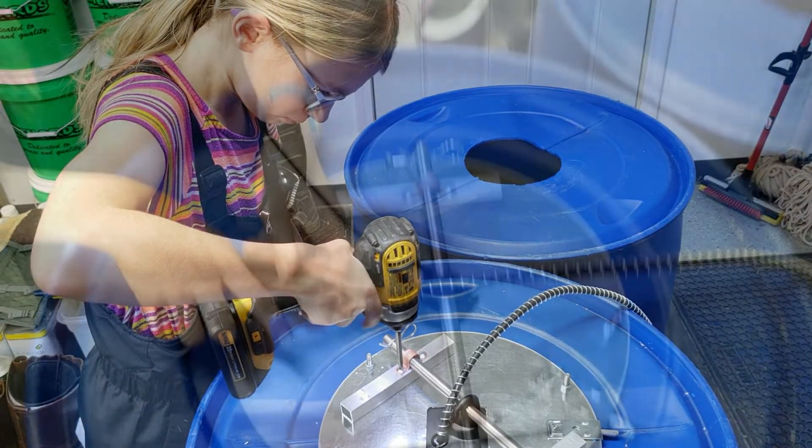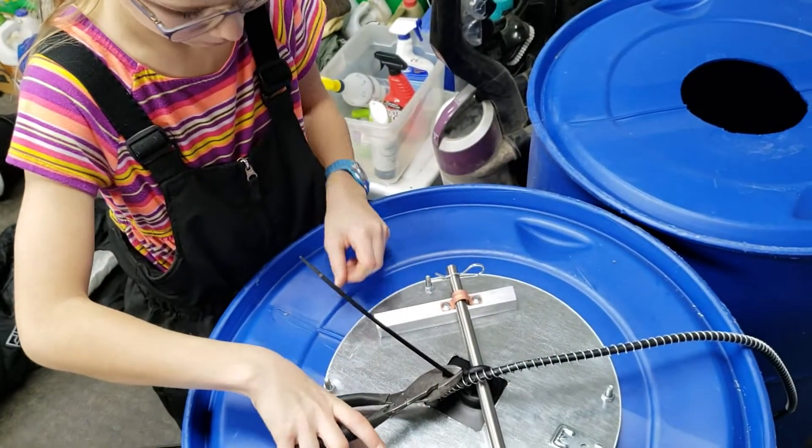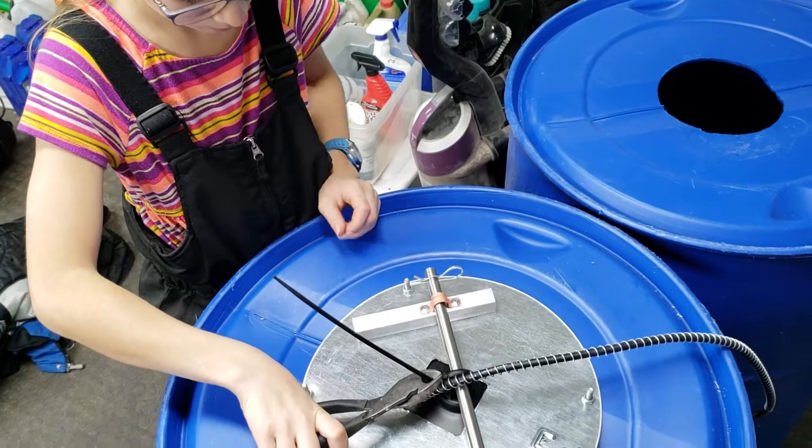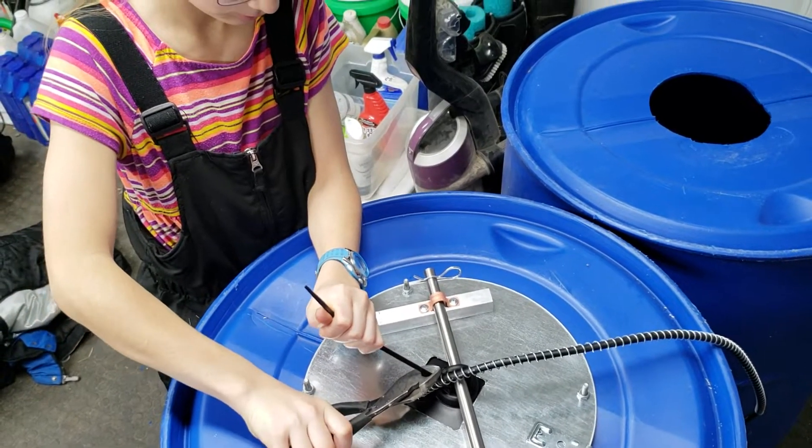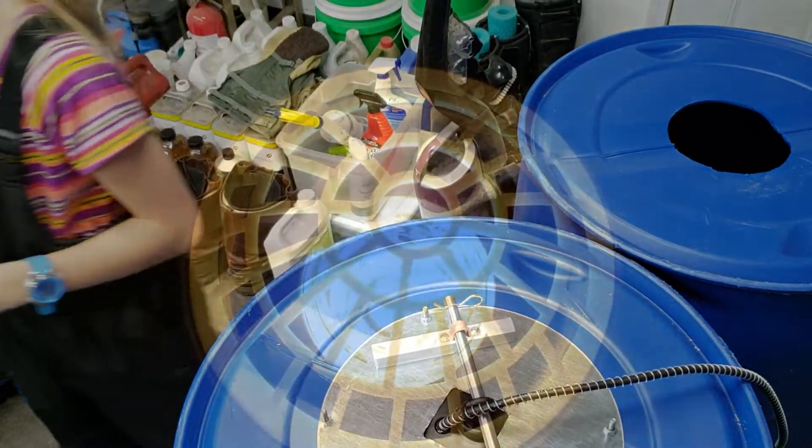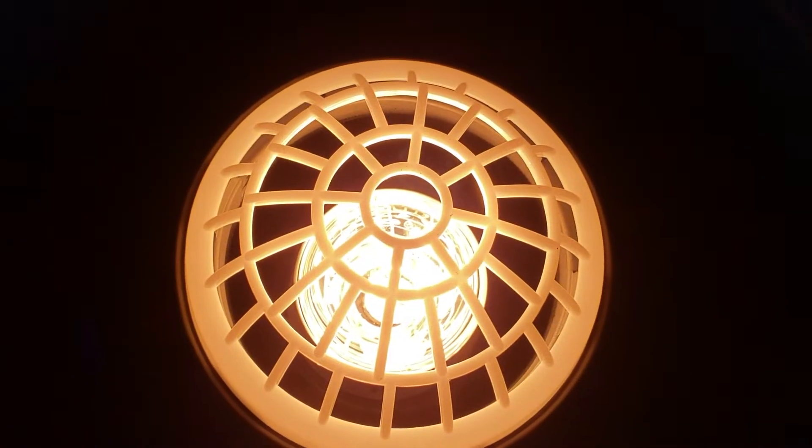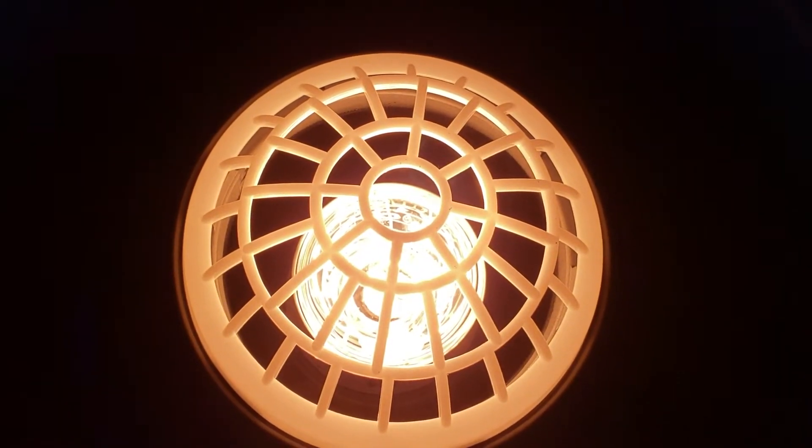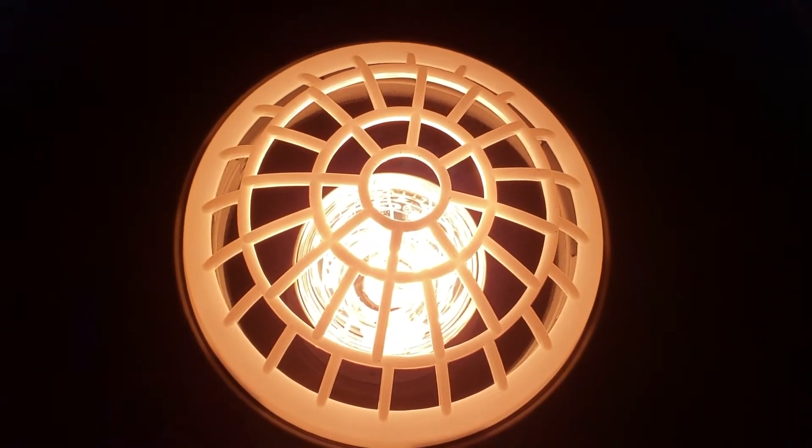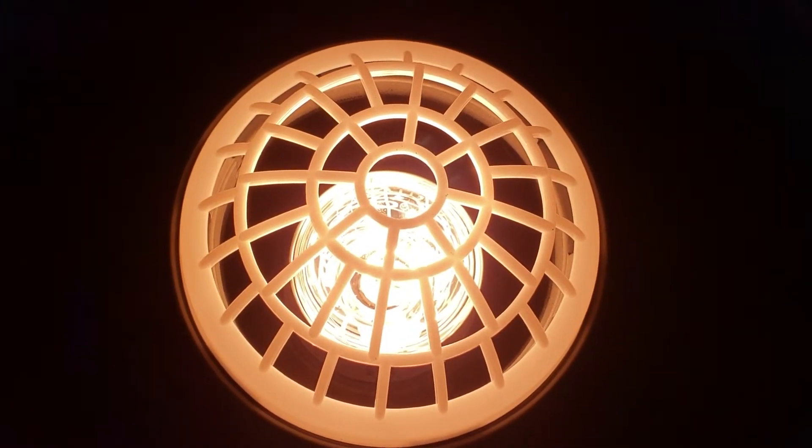We zip tie it just to kind of keep things from rocking and rolling in there a little more, and then basically ready to plug it in. This is a view from the inside. This has got about a 250 watt splatter resistant Fleet Farm heat lamp in it and it's ready to go.